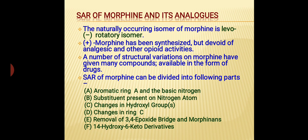SAR of morphine can be divided into six components: first, the aromatic ring A and the basic nitrogen; second, the substituent present on the nitrogen atom; third, changes in hydroxyl groups; fourth, changes in ring C; fifth, removal of the 3,4-epoxide bridge and morphinans; and sixth, the 14-hydroxy-6-keto derivatives.